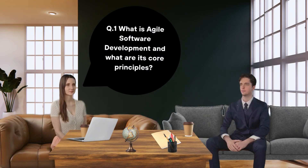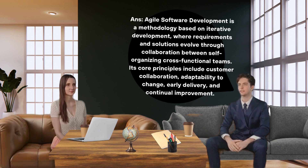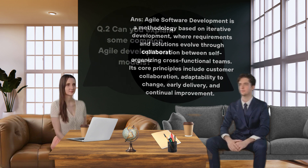What is Agile Software Development and what are its core principles? Agile Software Development is a methodology based on iterative development where requirements and solutions evolve through collaboration between self-organizing cross-functional teams. Its core principles include customer collaboration, adaptability to change, early delivery, and continual improvement.